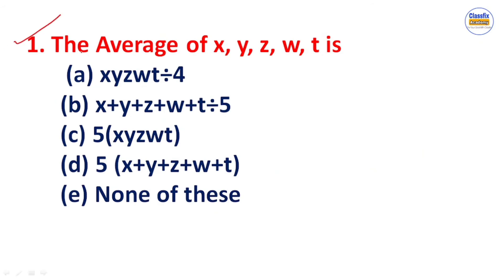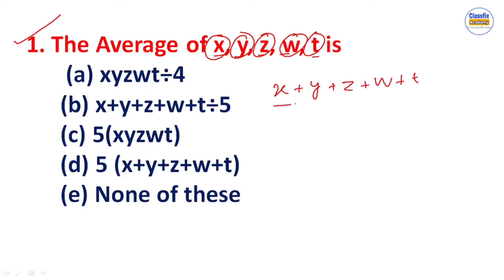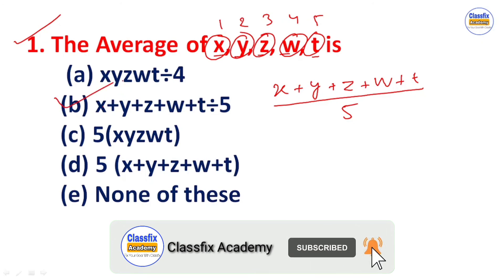Now a practice question: the average of x, y, z, w, and t. Using the average formula — sum of observations divided by number of observations — the answer is x plus y plus z plus w plus t divided by 5. Option B is the correct answer.